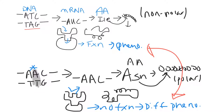The more variation in the population — meaning more versions of these different proteins — the more likely that one of them will result in a phenotype that will be advantageous for that organism in that environment. That's why we say having a lot of genetic variation in the population is advantageous for the ability of that population to evolve.